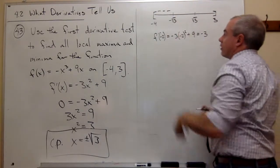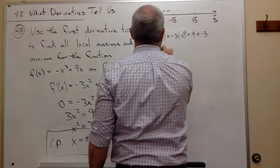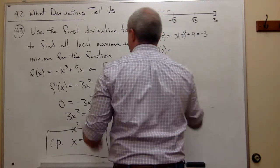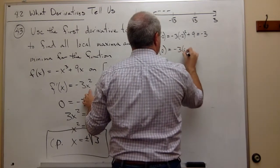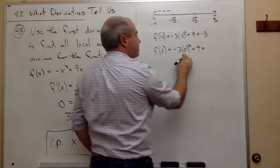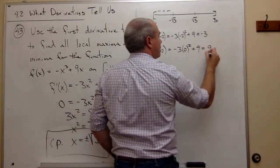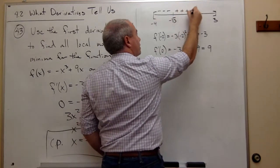I can plug in 0. If I plug in 0, I can do that almost in my head, but let's write it down anyway. I get -3 times 0² + 9. But 0² is 0, plus 9 gives me 9. More importantly, positive. So I can fill this in with positives.